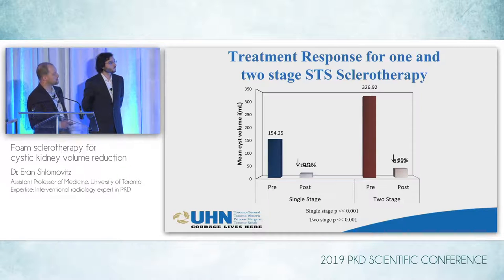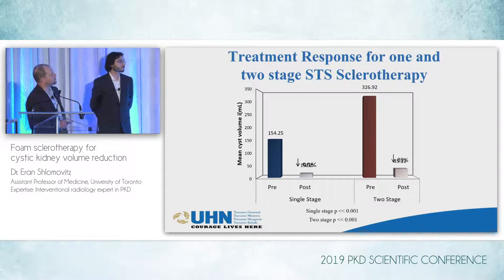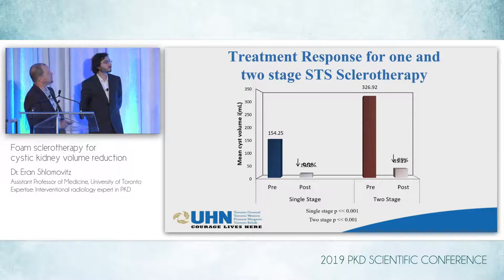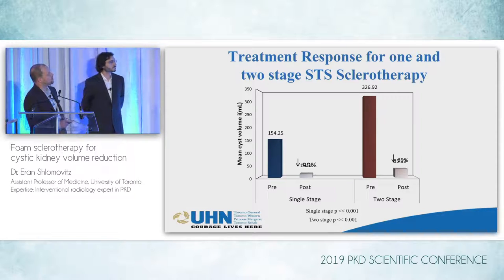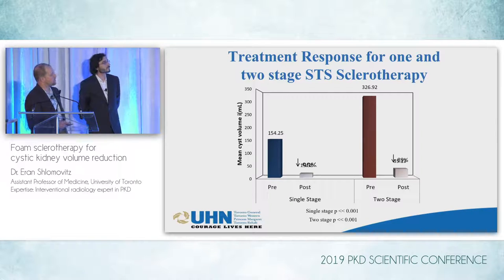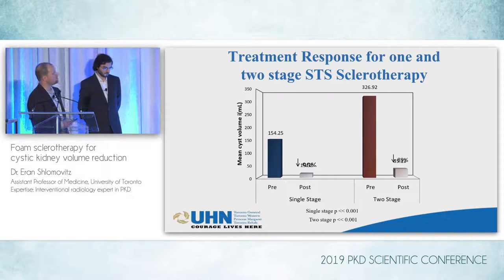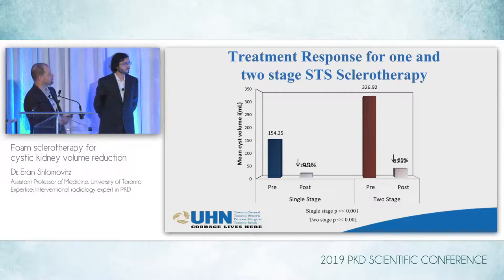Looking at single-stage versus two-stage procedures: you get about an 89% reduction in both cases. Obviously for single-stage, the starting volume is lower. For the two-stage procedure, the starting volume is much higher, but you can still achieve about a 90% reduction in cyst volume even for these quite large cysts.